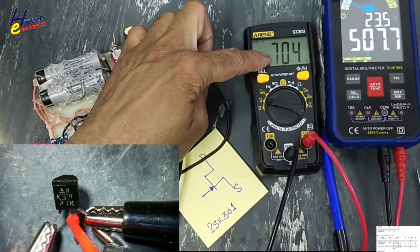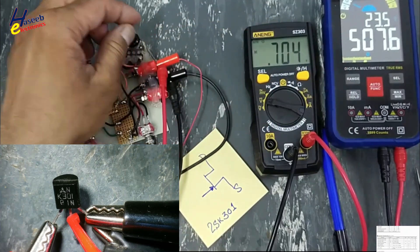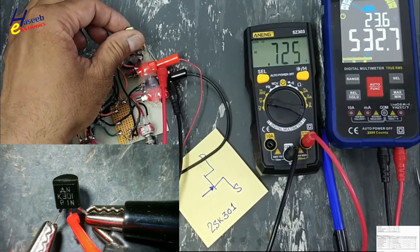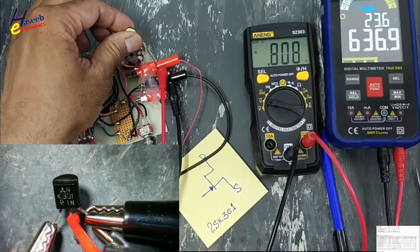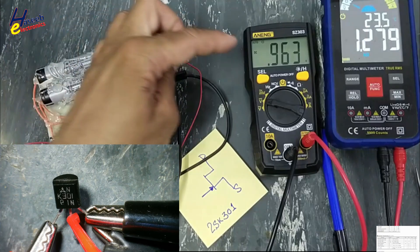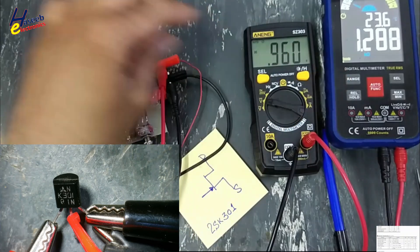I applied 0.7 volt to the gate. The channel resistance is 507 ohms. We will increase the voltage further. When we are increasing gate voltage, the resistance is increasing. As the gate voltage increases, the resistance keeps increasing.